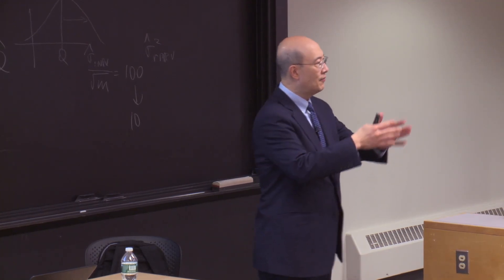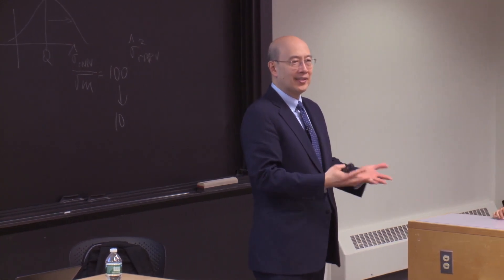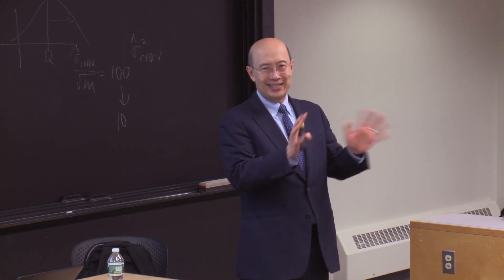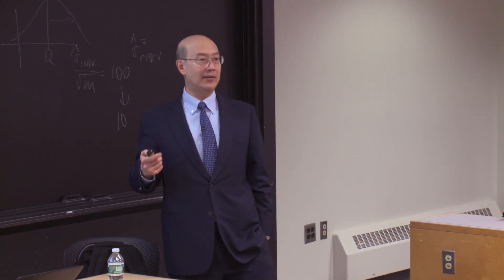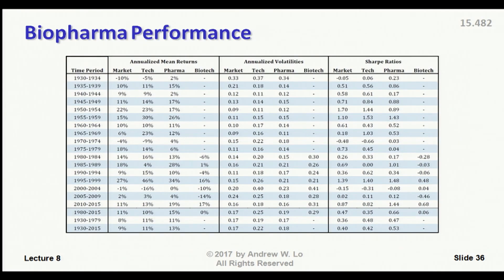However, that's taking it from 1980 to 2015 — a ridiculously long time period where nothing is the same. 1980 was before the human genome was sequenced, so that gives you an idea of how outdated it is. Looking at the last five years, the biotech sector has posted a 17% compound annual return with a volatility of 0.31. The Sharpe ratio is 0.68, which is pretty good until you see that the pharma Sharpe ratio is 1.44.